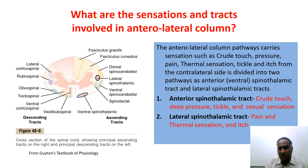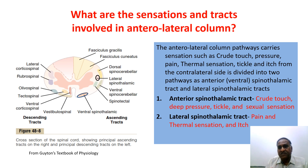In the spinal cord we have the posterior column, the lateral column, and the anterior column. These ascend as the anterolateral column, which carries sensations of crude touch, crude pressure, pain, thermal sensation, tickle, itch, and also sexual sensations from the contralateral side of the body.